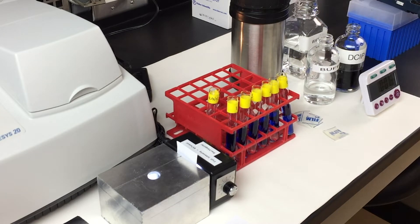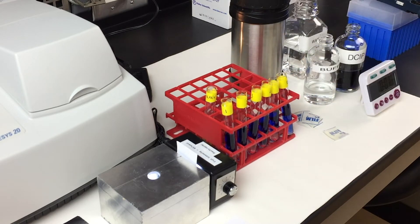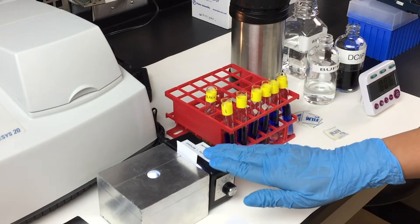Pipetting accuracy can be checked at this point by looking at the level of the solutions in all six test tubes. At this point, all test tubes should have the same level of liquid inside. You work with one tube at a time, starting with tube one. The number corresponds to the number of filter papers inserted into your light box.